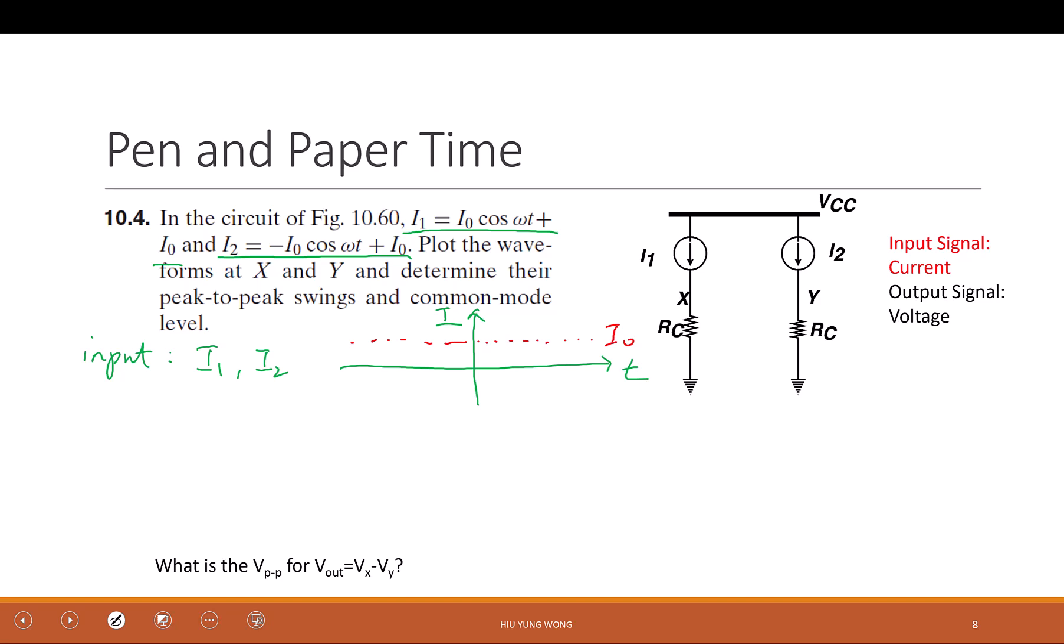I0, right? So for the first one, how would it look like? When t is zero, then cosine omega t is one, then you have 2I0. So you have something like this. Where this point is 2I0. Because cosine omega t goes from negative one to one. When it is one, then you have 2I0. When it is negative one, you have zero. So it's offset by I0.